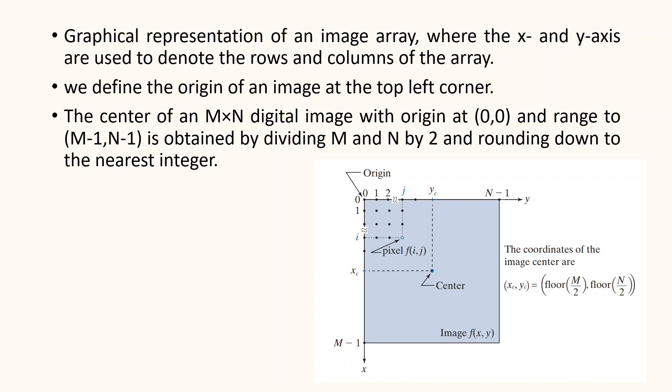This image shows a graphical representation of an image array where the x-axis and y-axis are used to denote the rows and columns of the array. We have mentioned earlier that we can use the notation f(i,j) when referring to a pixel with coordinates i and j.